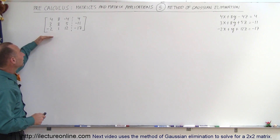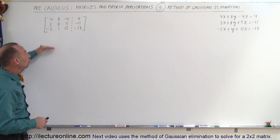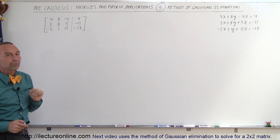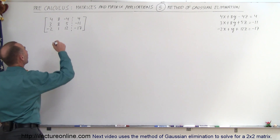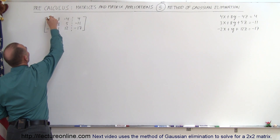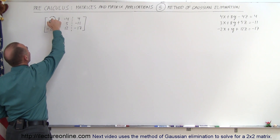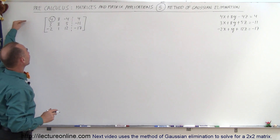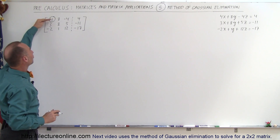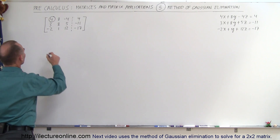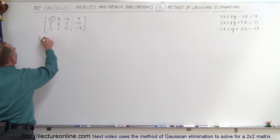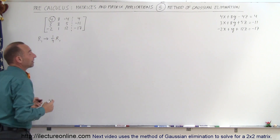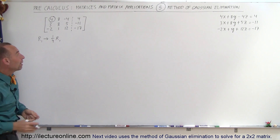We're going to do that by taking this augmented matrix and reducing it so that we have 1s across the diagonal and 0s everywhere else. The first step is to go to the very first upper-left corner element and change it to a 1. We can do that by multiplying the entire row by one-fourth to reduce it to a 1.